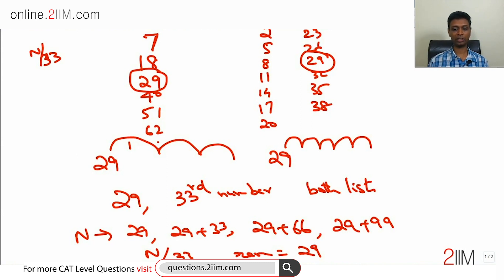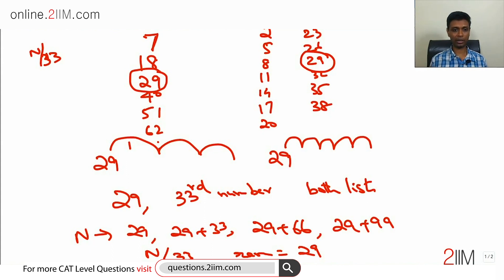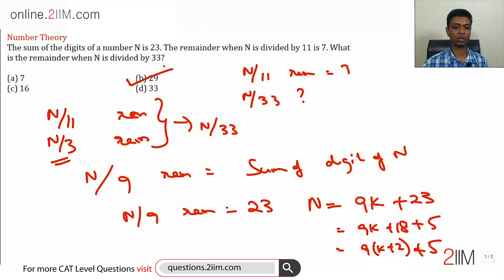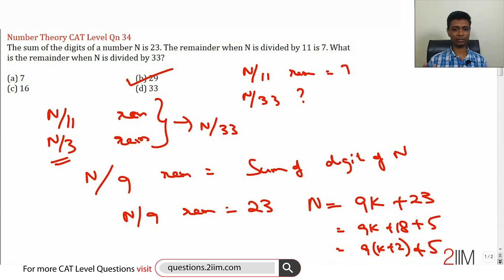So if you know the remainders of n÷11 and n÷3, you can find the remainder of n÷33. To find it, write down both sequences — there will be one point where they overlap, and that is your remainder when dividing by 33. Remember, you can do this only because 11 and 3 are co-prime; otherwise it gets tricky. In general, if you know remainders for n÷a and n÷b, and a and b are co-prime, you can find the remainder for n÷(a×b). So n÷33 remainder is 29. The two key ideas: the sum of digits of a number is the remainder when dividing by 9 — here the remainder is 23, which reduces to 5. And knowing remainders for n÷11 and n÷3 lets us find the remainder for n÷33.